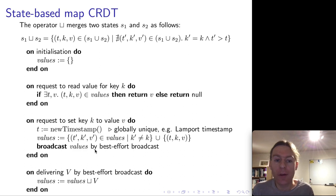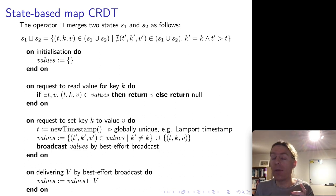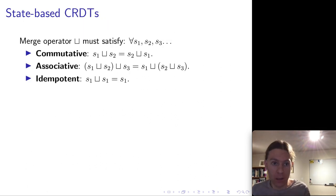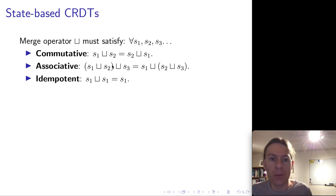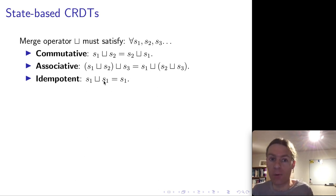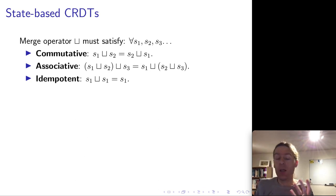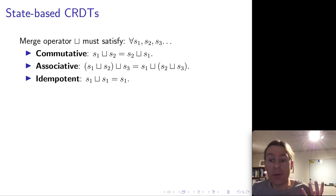An interesting thing to note is that with state-based CRDTs, we can use best effort broadcast rather than reliable broadcast — a distinction from the operation-based approach. The merge operator must satisfy three conditions: it must be commutative, meaning we can swap the order; it must be associative, meaning we can swap the brackets; and it must be idempotent, meaning you can merge a state with itself and that does not change anything. If we have a merge operator satisfying these conditions, then we can build a state-based CRDT simply by broadcasting states and merging them whenever we receive one from another replica.